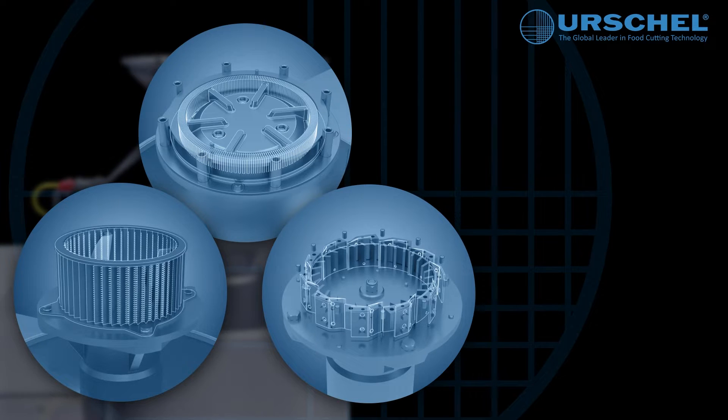Comminuting, granulating, milling, flaking, slicing, liquefying, dispersing, and pureeing are all simplified on the Model 1700.